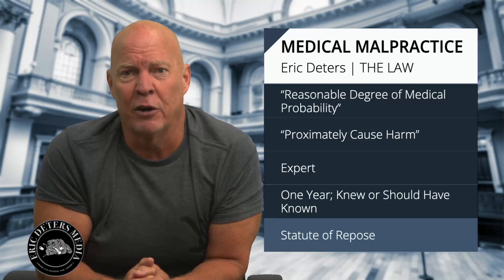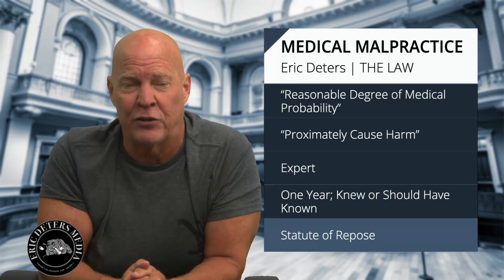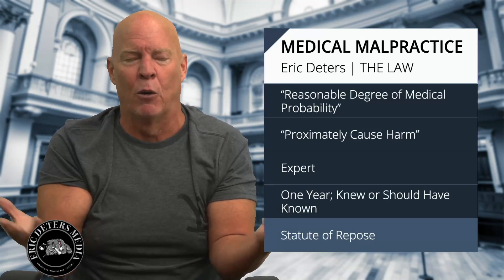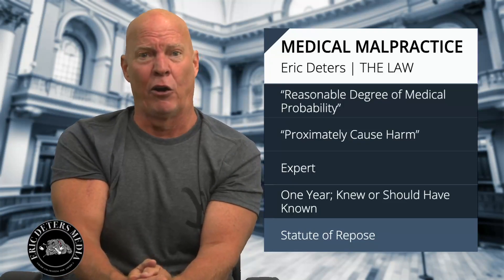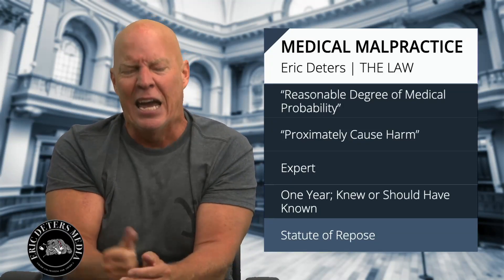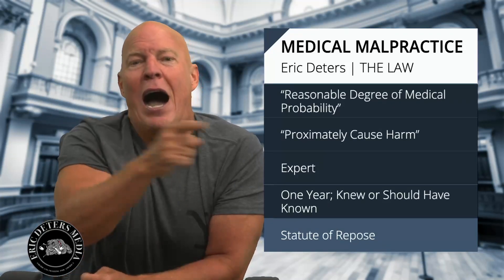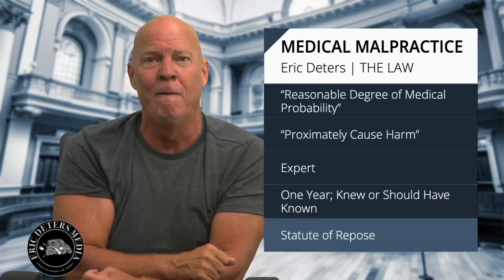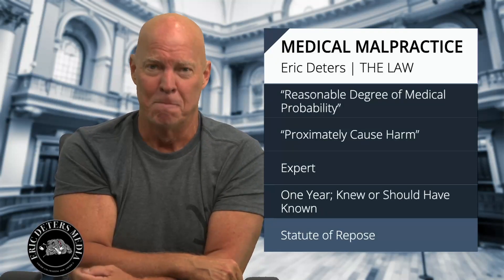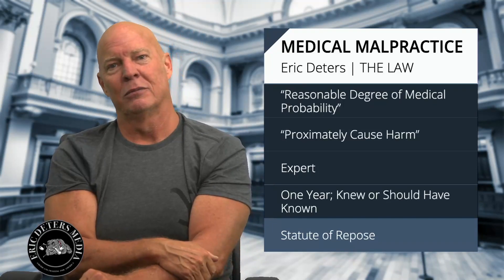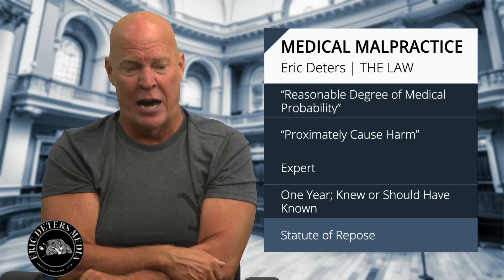A lot of Durrani victims also lost their claims based upon the statute of repose — they had no idea there was malpractice until the news hit. He was arrested, and people started thinking they ought to look at their records. It is so wrong. If you live in Ohio, your Ohio legislators passed that law, your Ohio governor signed it, and your Ohio Supreme Court found it constitutional. That is crooked. So if you're in Ohio, you've got to get moving.